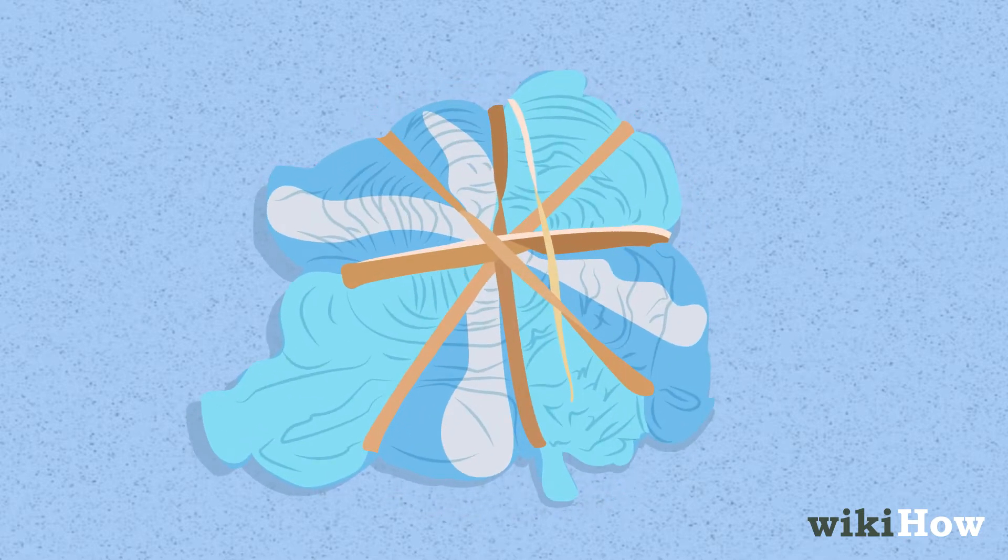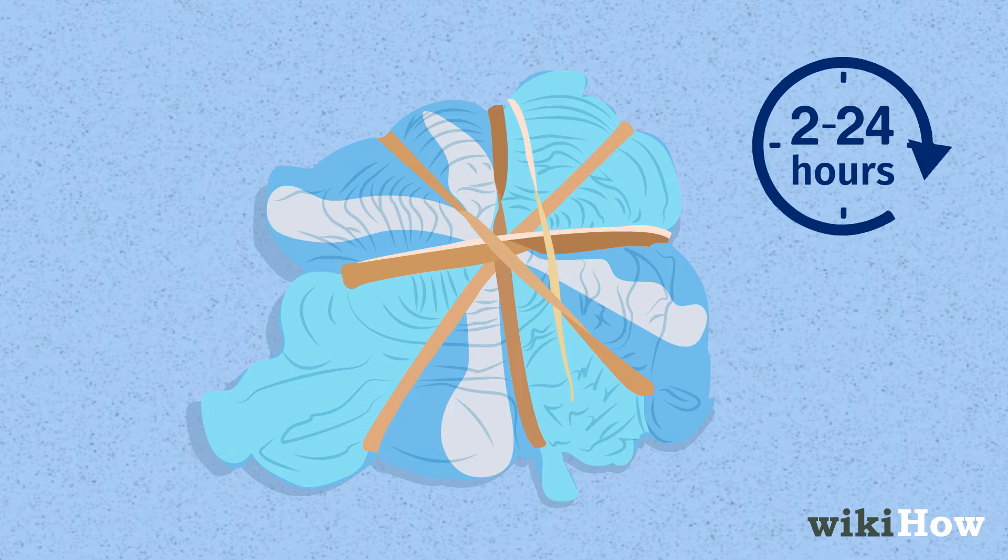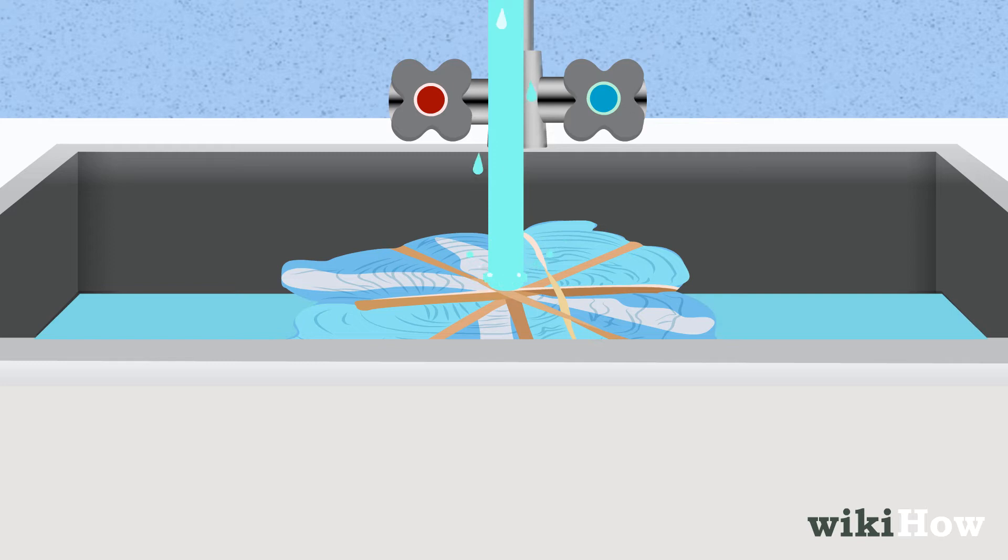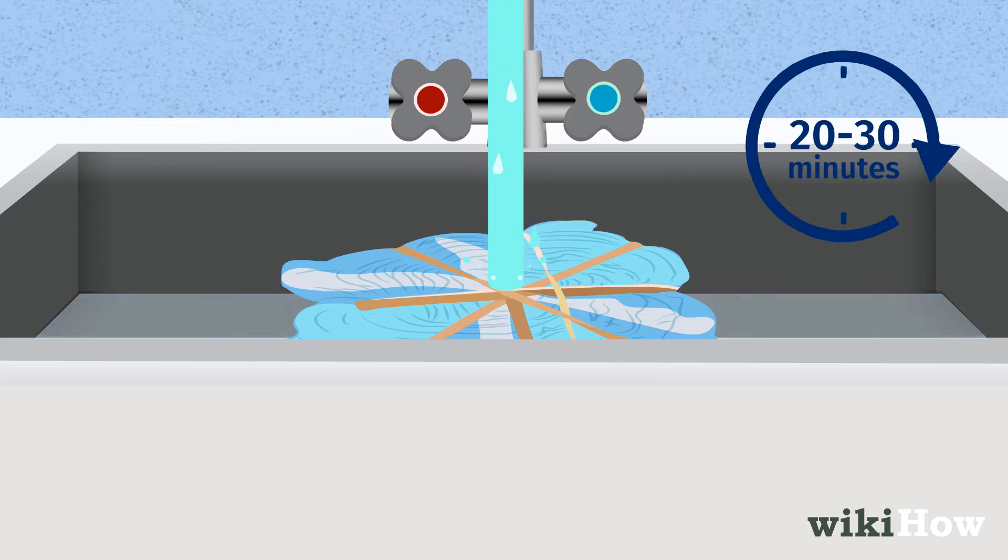After you've allowed the dye to set for 2 to 24 hours, rinse the dyed item under cold water, leaving the strings or rubber bands in place. Keep rinsing until the water runs clear, which may take as long as 20 to 30 minutes depending on the size of the item and how much dye you used.